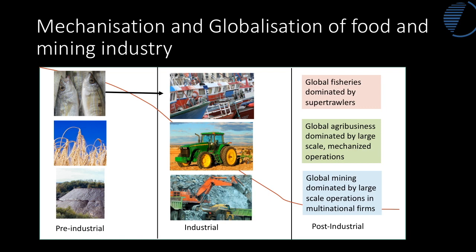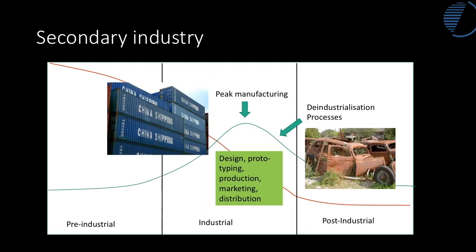The reason for such a dramatic decline from 70-80% of employment in primary industries is that those sectors are transformed by industrialisation. In fisheries, sea trawlers dominate and far fewer boats are needed. In agribusiness, large-scale mechanised operations reduce the workforce needed. Global mining similarly concentrates into a few multinational firms. This is the heart of the Clarke-Fisher model — the green line — where industrial output and employment increase.